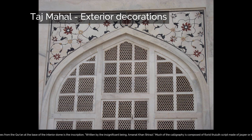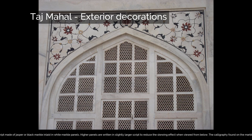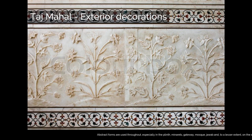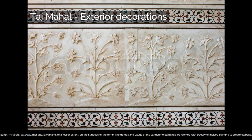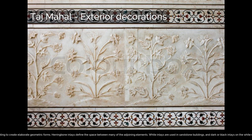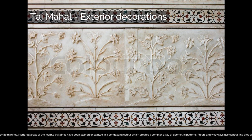Much of the calligraphy is composed of florid thuluth script made of jasper or black marble inlaid in white marble panels. Higher panels are written in slightly larger script to reduce the skewing effect when viewed from below. The calligraphy found on the marble cenotaphs in the tomb is particularly detailed and delicate. Abstract forms are used throughout, especially in the plinth, minarets, gateway, mosque, and jawab. The domes and vaults of the sandstone buildings are worked with tracery of incised painting to create elaborate geometric forms. Herringbone inlays define the space between many adjoining elements. White inlays are used in sandstone buildings, and dark or black inlays on the white marble. Mortared areas of the marble buildings have been stained or painted in a contrasting color, creating a complex array of geometric patterns. Floors and walkways use contrasting tiles or blocks in tessellation patterns.